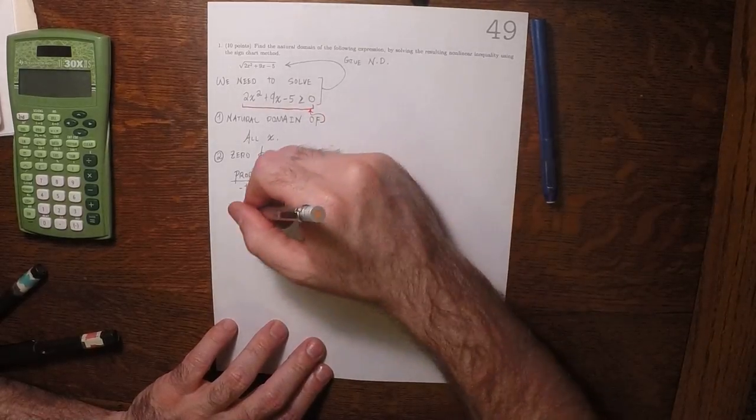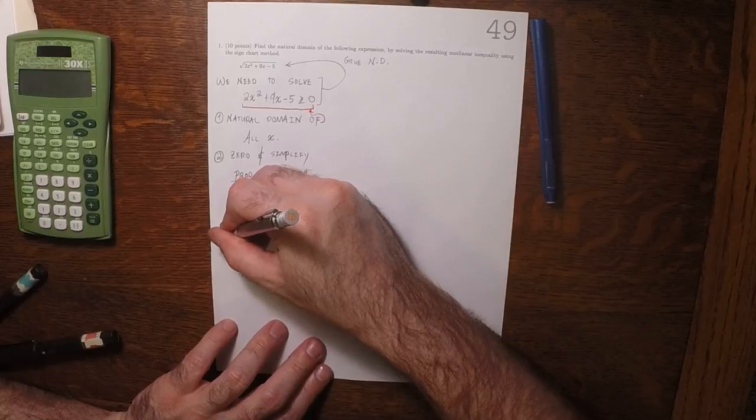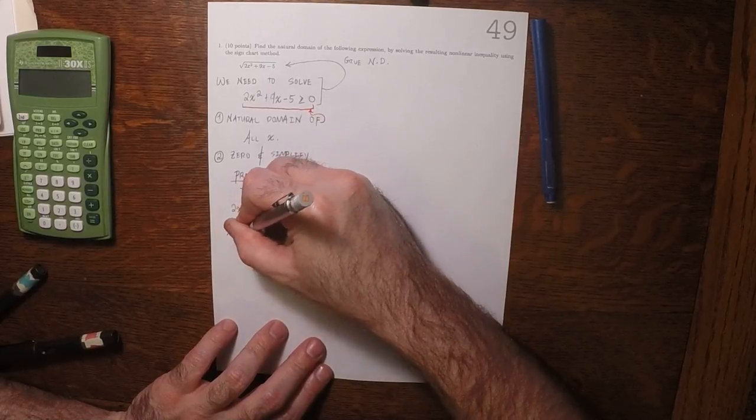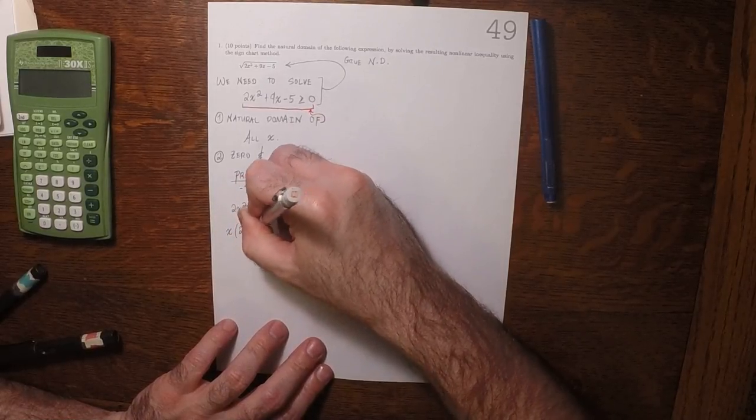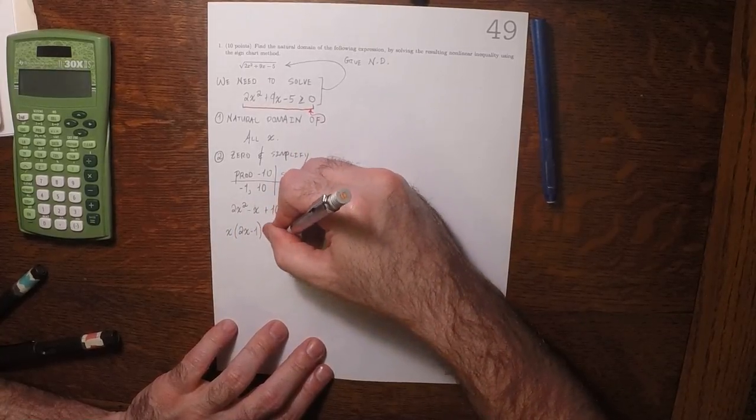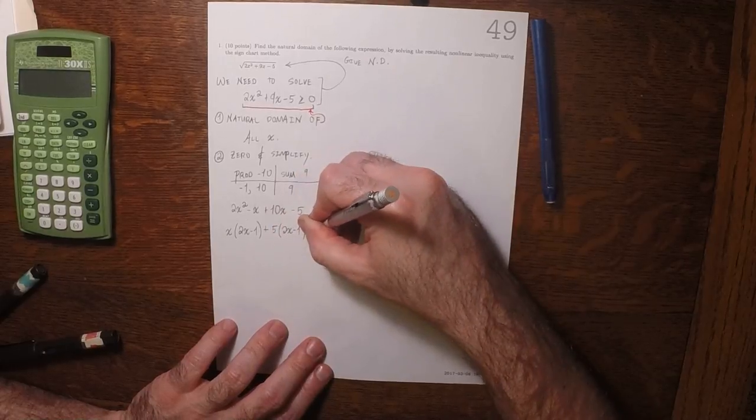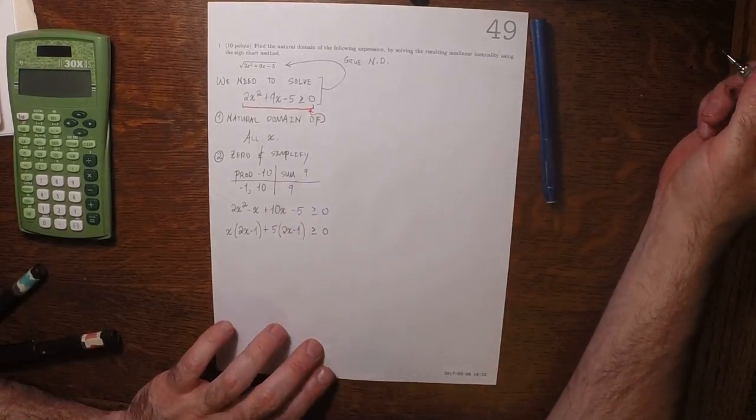So now in each pair we'll factor out the greatest common factor. So that would be x times 2x minus 1, and then plus 5 times 2x minus 1, greater or equal to 0.